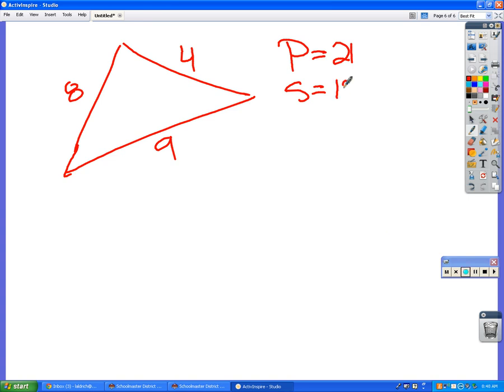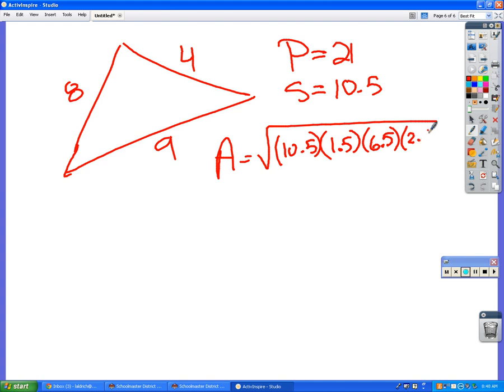Ten point five. Okay, so my area is going to be the square root of the semi-perimeter times the semi-perimeter minus each one of the sides. So ten point five minus nine is one point five. Ten point five minus four is six point five. And ten point five minus eight is two point five.